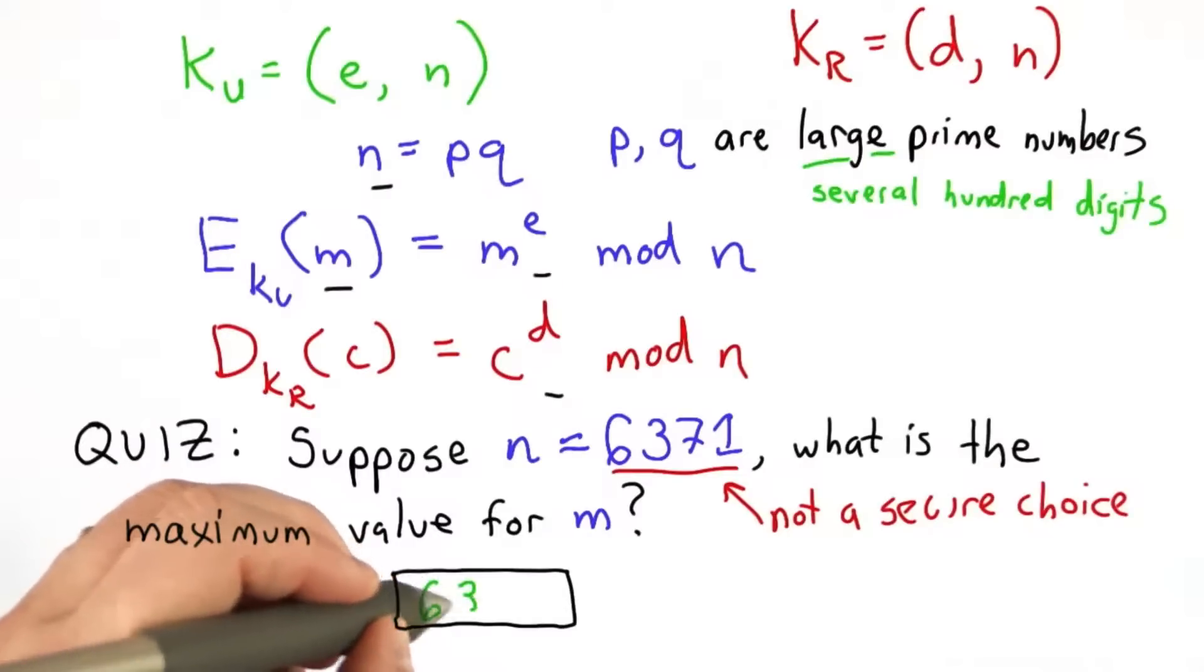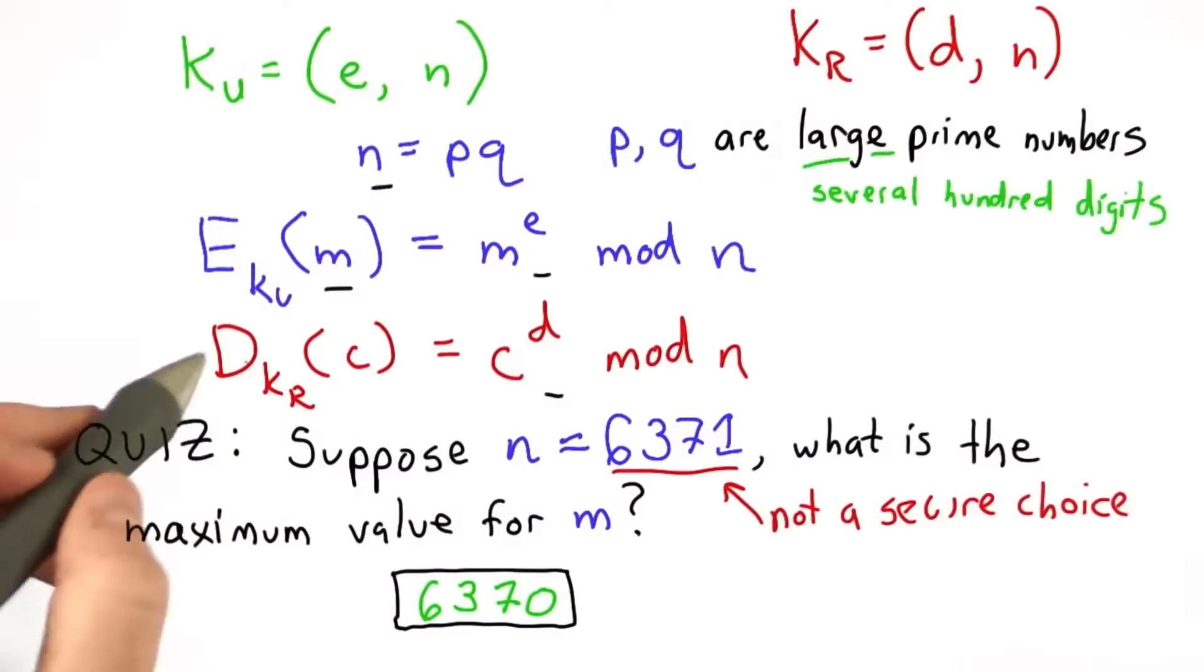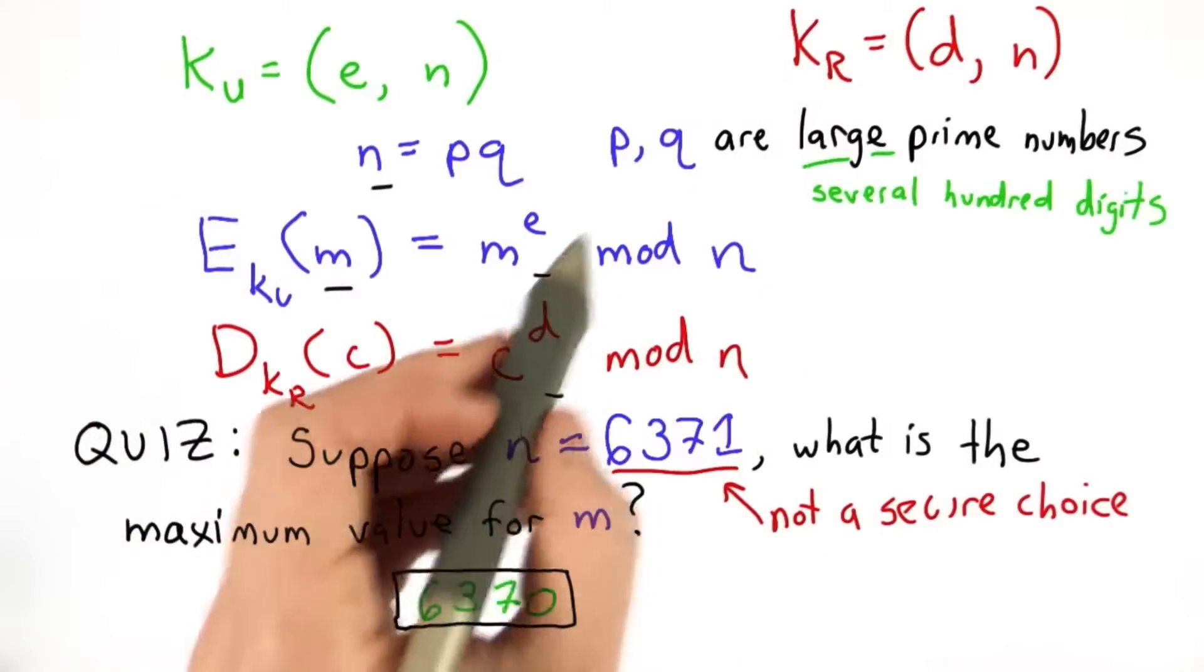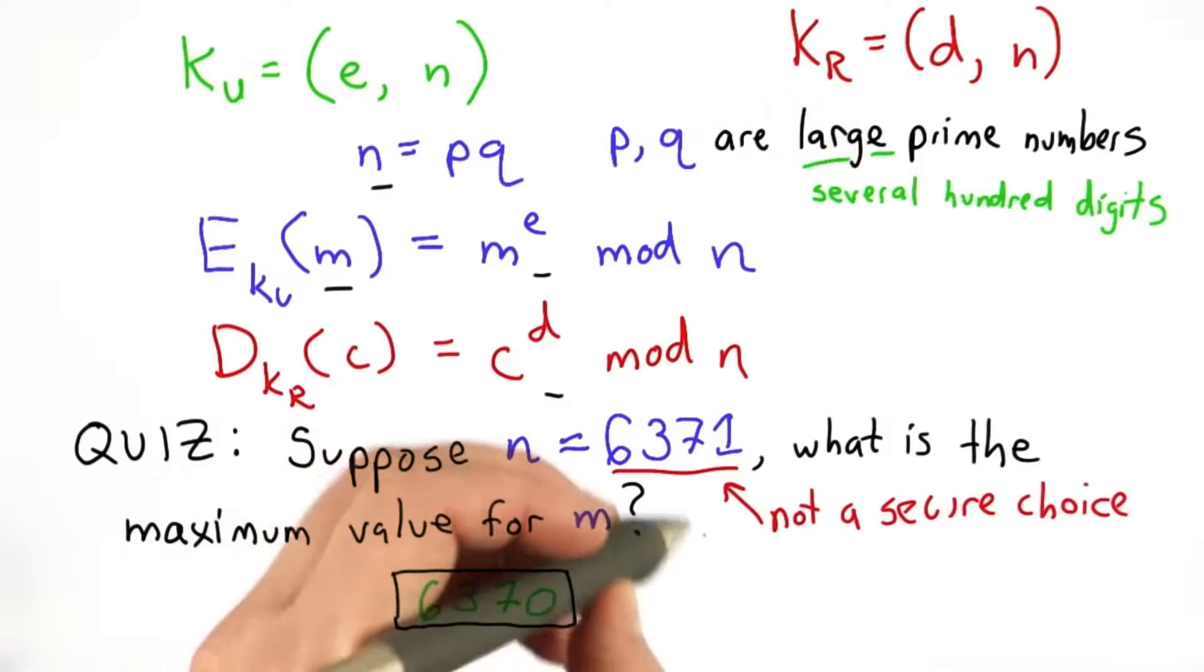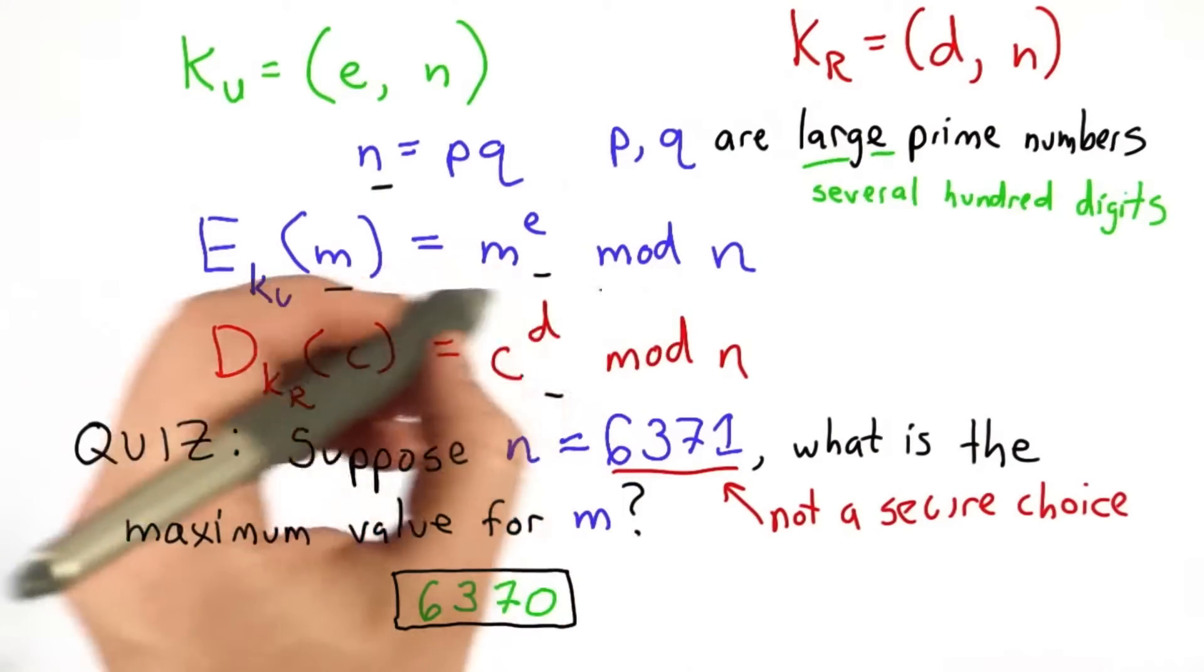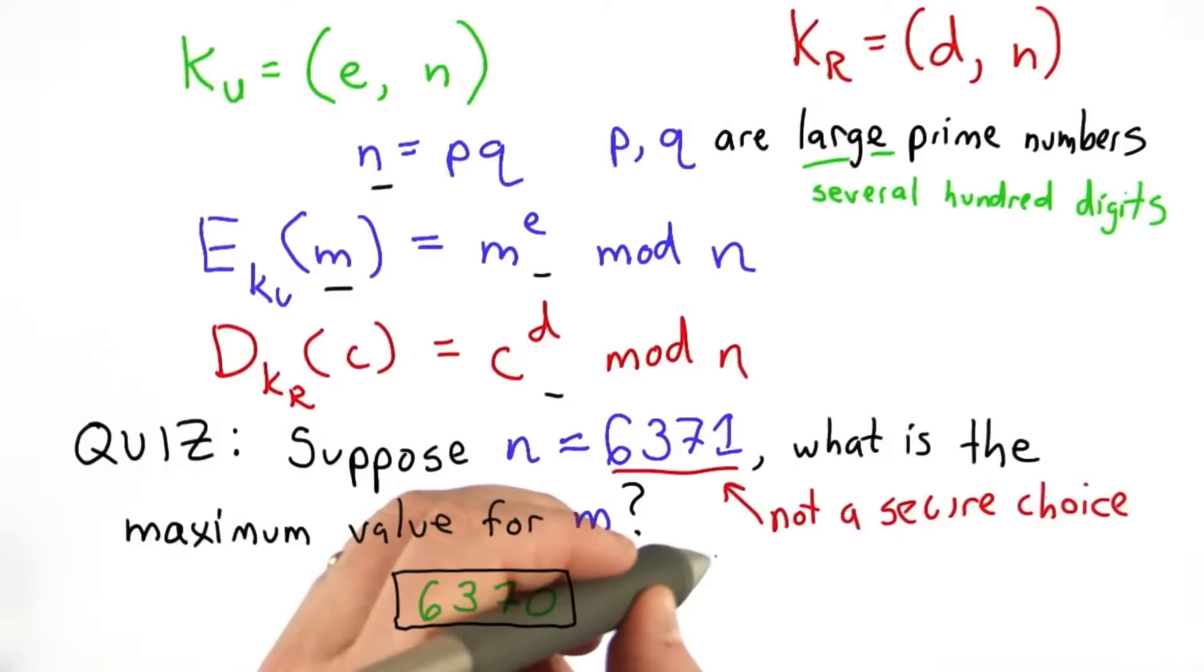The answer is 6,370. In order for this to work, we need a mapping. We need encryption to be invertible. Given that the output is mod n, we have output values. The possible values here would be from 0 to n-1.